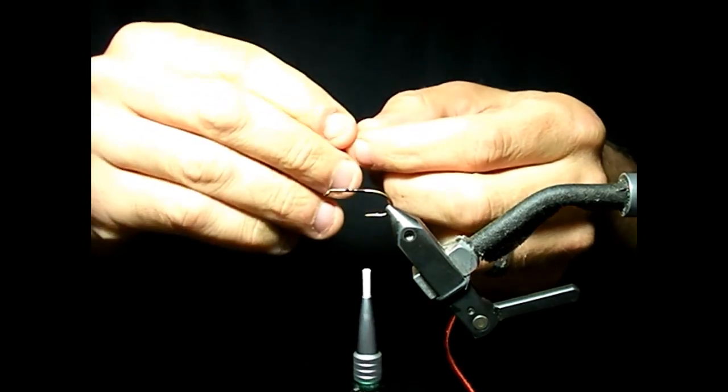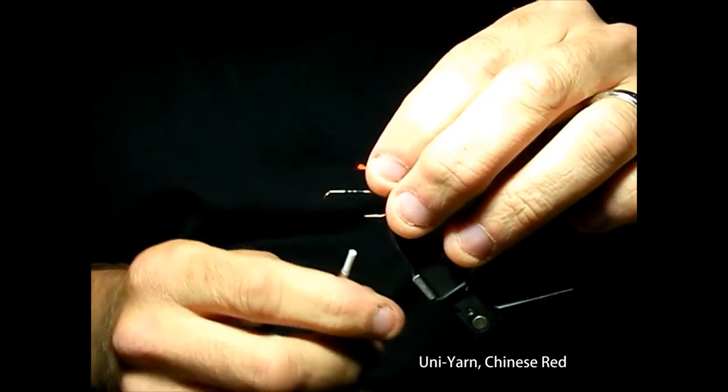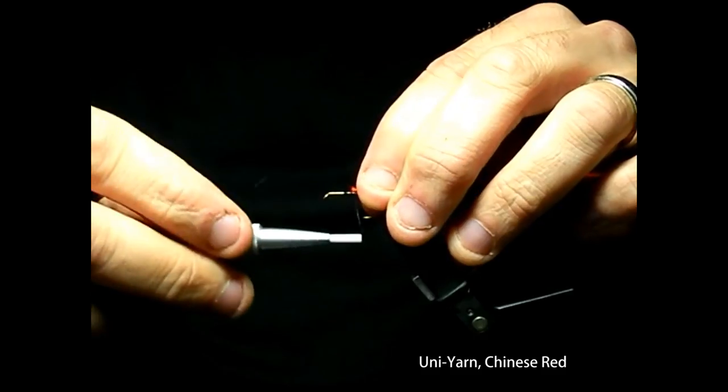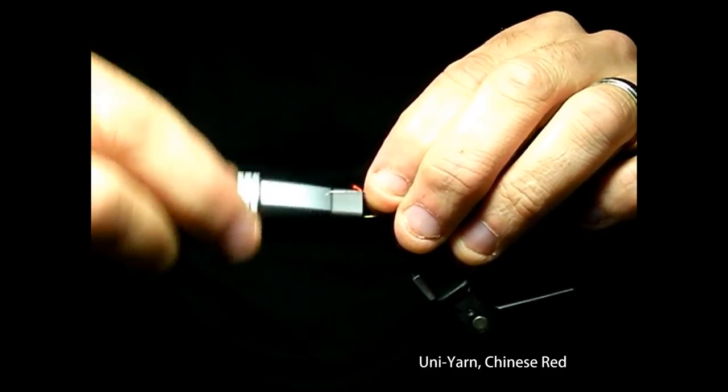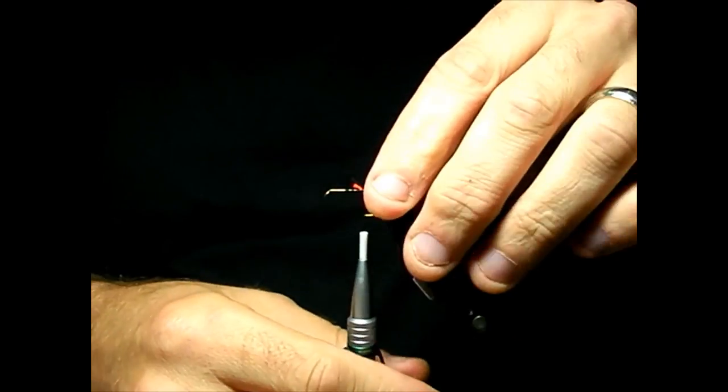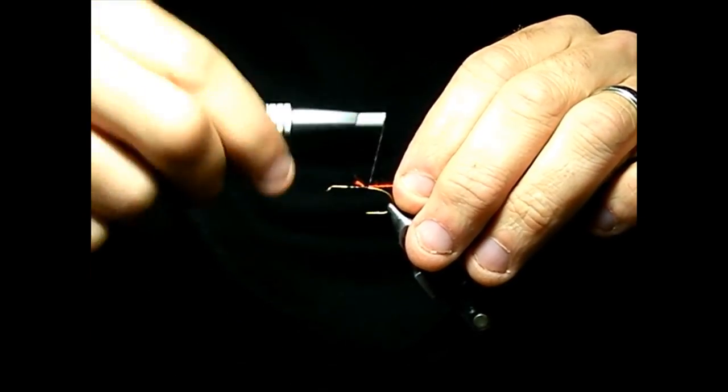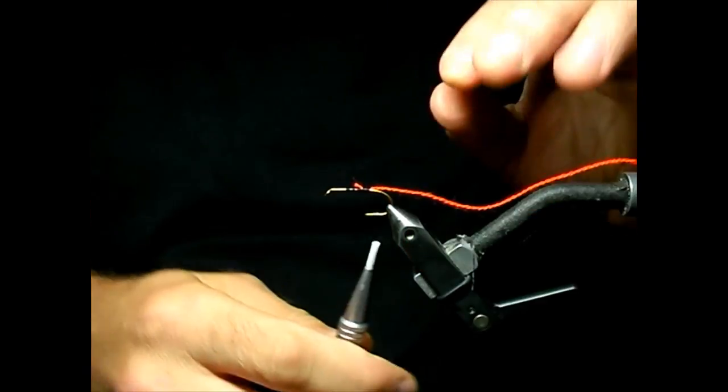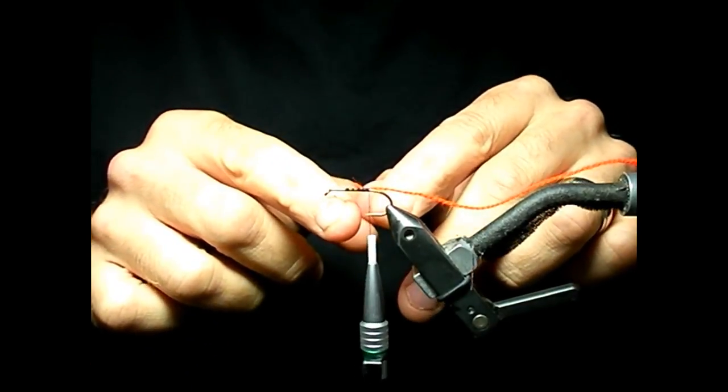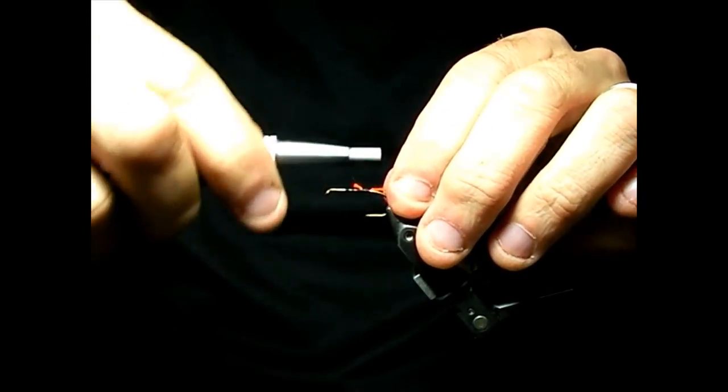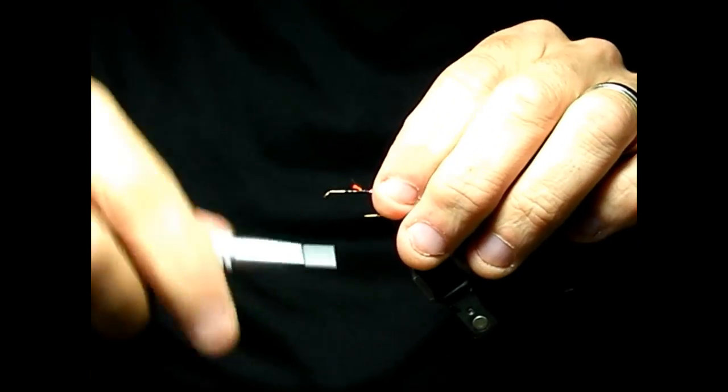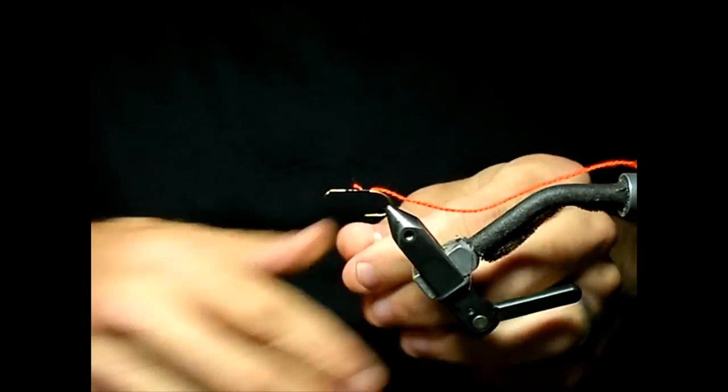Then tie in a piece of uni-yarn, we're using red today. Go ahead and tie that back a little bit, securing it so the thread lies about halfway between the hook point and the barb, then wrap back forward a little bit.